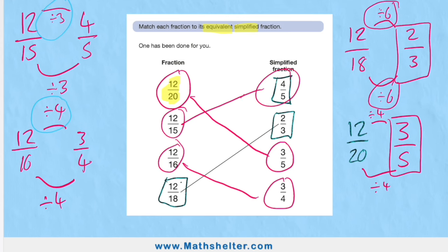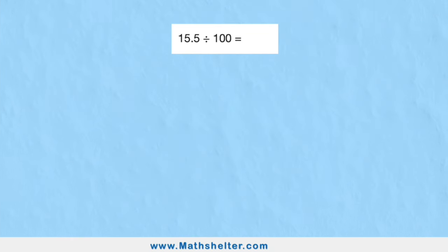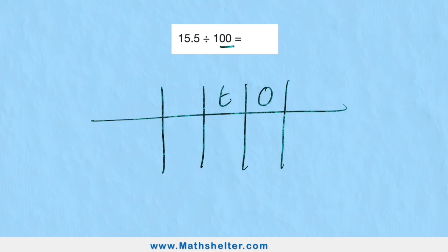15.5 divided by 100. These kind of questions are always in the SATs papers. We must know how to solve this. To solve this, we are going to use our place value chart. If we are using a place value chart, we can simply just move two spaces down. Let's create my place value chart.